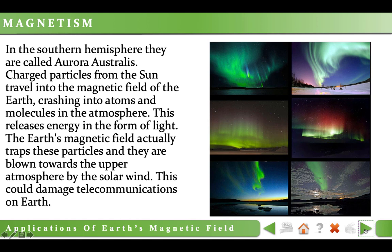We know these lights as aurora australis. The earth's magnetic field actually traps these particles and they are blown towards the upper atmosphere by the solar wind. This could damage telecommunications on earth.